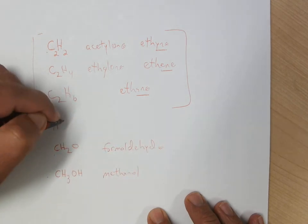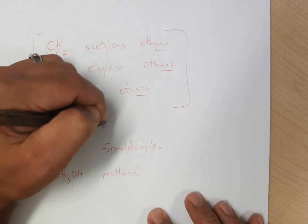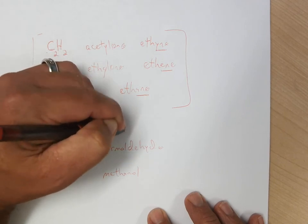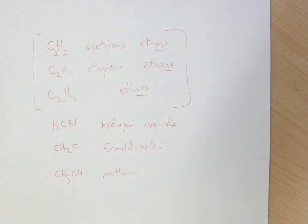which we just did, so formaldehyde, and then HCN is a great one if you want to see some triple bonds and see some SP hybridization, so the hydrogen cyanide molecule is another one,